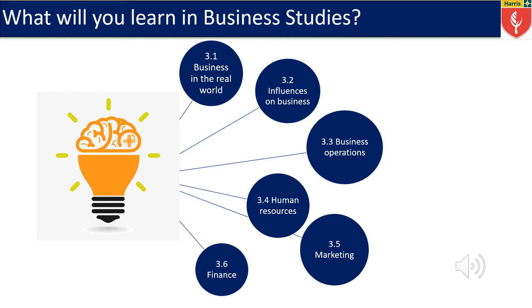Number three is business operations. Here we look at the production process and how to make it more efficient. 3.4, we look at human resources. This is all to do with labour, so we will look at ideas of recruitment, training, as well as motivation.